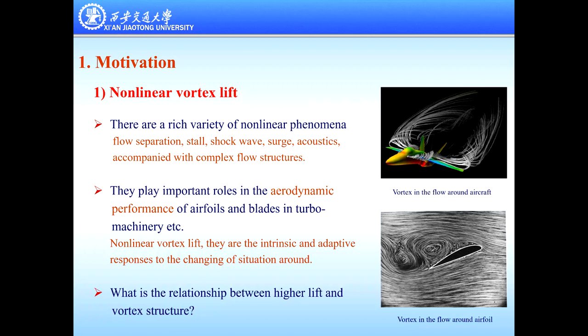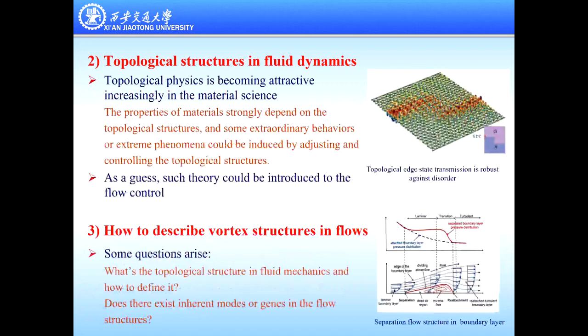So the problem here is: nonlinear vortices are intrinsic and attempt to respond to changing situations around them. But what is the relationship between the aerodynamic lift and vortex structures? Maybe we can borrow some ideas from other disciplines. Scientists from material science believe that the properties of materials strongly depend on topological structures, and some extraordinary behaviors or extreme phenomena could be introduced by adjusting or controlling topological structures. As a hypothesis, such theory or thinking can be introduced to flow control.